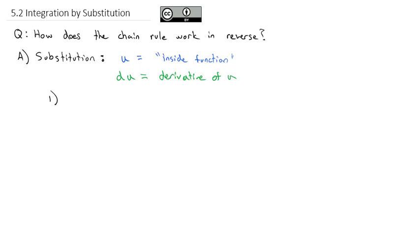Here's what that looks like and how it makes our problems so much easier. If I wanted to find the integral of e to the 3x squared times 6x dx, what I notice is we have e to the stuff. And if that was just e to the x, its antiderivative would be really easy to find. In addition, the derivative of 3x squared is 6x — notice the derivative is sitting in the problem, multiplied by my e to the stuff.